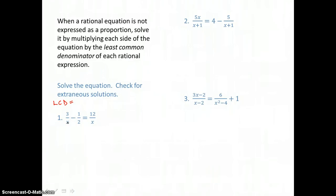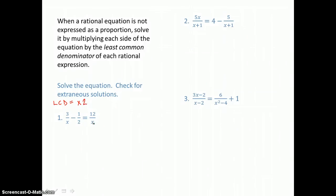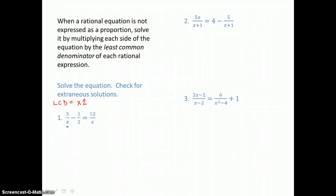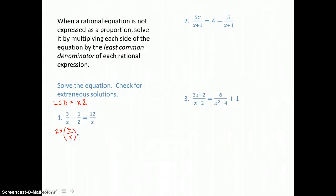Looking at the first denominator, I need a factor of x. Then I'll look at the second denominator: 2 — I'll need a factor of 2. When I look at the third denominator, I need a factor of x, but I already have a factor of x in my LCD, so I'm not going to put another one in. So the least common denominator is 2x, and I want to multiply both sides of this equation by 2x to clear the equation of denominators, distributing and multiplying every fraction by 2x.